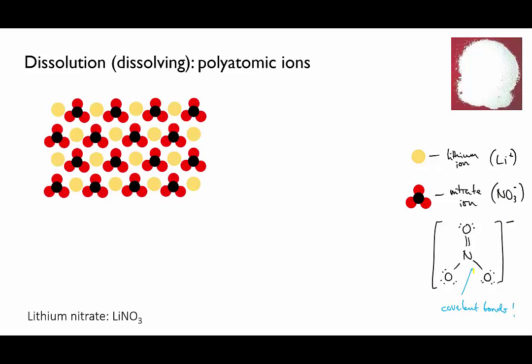Remember that the bonds within a polyatomic ion like nitrate are covalent. Nitrogen and oxygen are both non-metals with high electronegativity, so when they bond to each other, they do it covalently by sharing electrons.